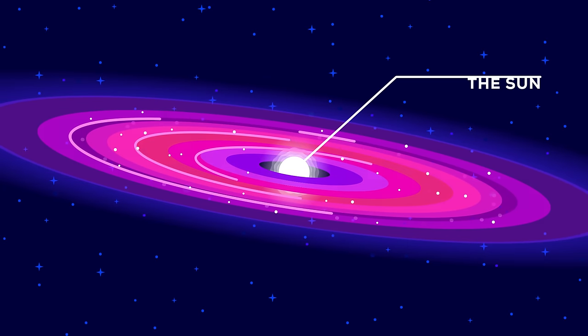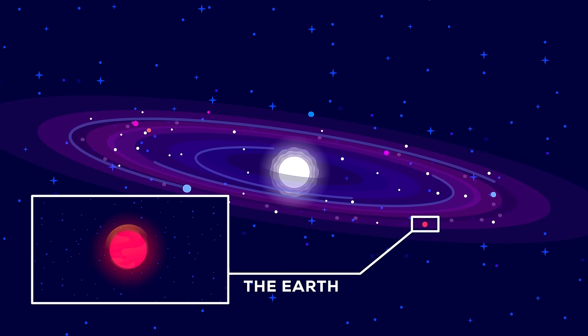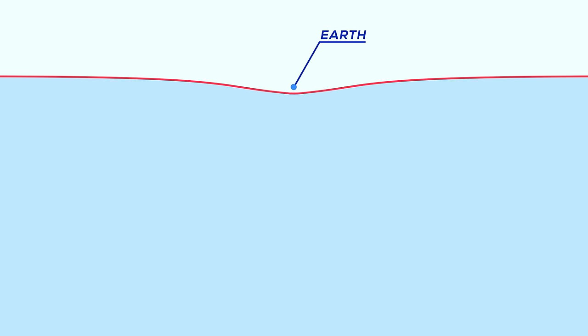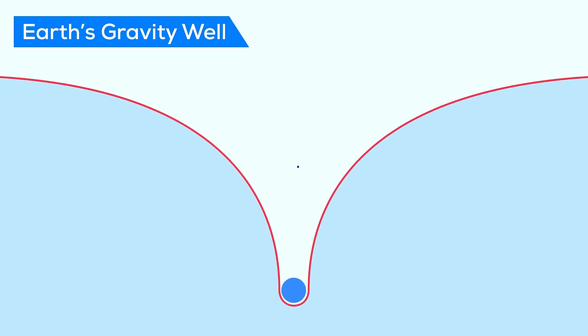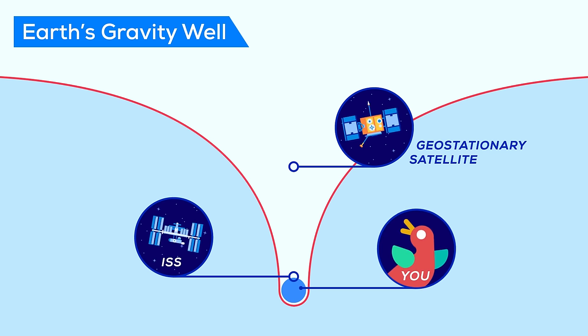Billions of years ago, the gravitational attraction of trillions of trillions of dust particles orbiting our sun pulled them together until they formed a planet. This process used energy and created the gravity well we're now a part of. The deeper you are inside a gravity well, the more energy you owe gravity.